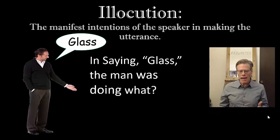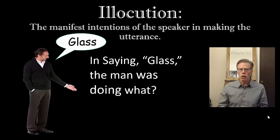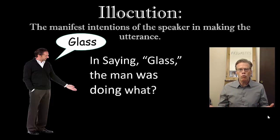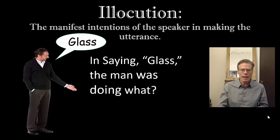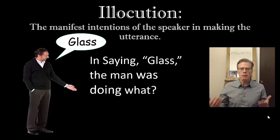The question is: in saying 'glass' in each of these different contexts, the man was doing what? Well, in that first example where the person is barefoot, he's warning. In the second example, where he's the father telling the kids they messed up, he's reprimanding. In the teaching example, he's informing. In the example where he wants somebody to hand him a glass, he is requesting. In the park example, where he's looking at all the litter, he's complaining. Each of those is a type of speech act — what we can call a metapragmatic descriptor of speech acts.